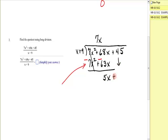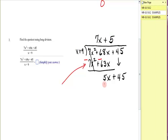Combining terms, those are opposites. 68x minus 63x gives me 5x. Bring down the next term, which is a plus 45. Start over. What would you have to multiply x by to make it become 5x? And the answer is 5. 5 times x is 5x, and 5 times 9 is 45.